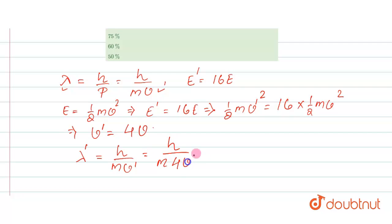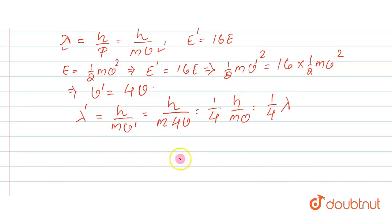v' is 4v, so this would be 1 by 4 h divided by mv, where h divided by mv is your λ. So now your λ' is 1 by 4 of λ. So what